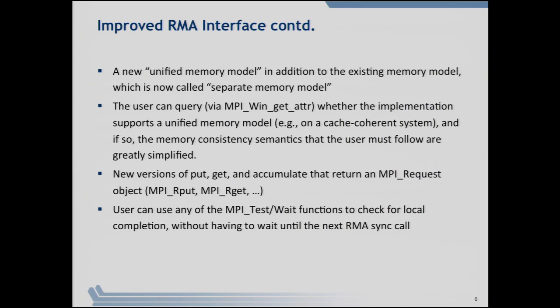There are also new versions of the put, get, and accumulate functions called MPI_Rput, MPI_Rget, and MPI_Raccumulate, which return an MPI request object. You can then call the usual test and wait functions to check for local completion — this does not mean the operation is completed remotely, only that the local side is done.